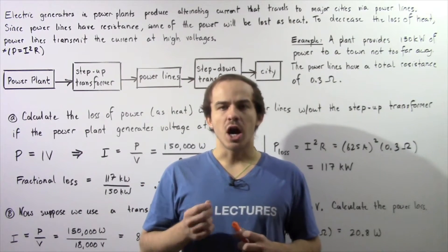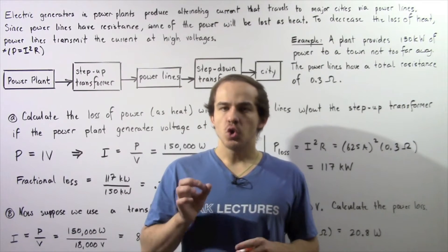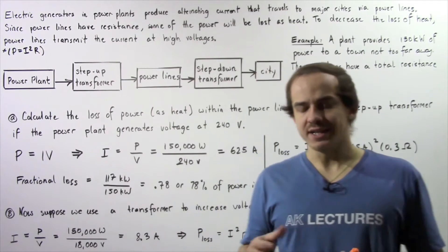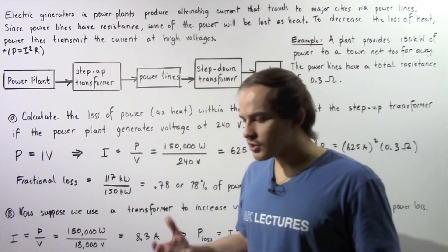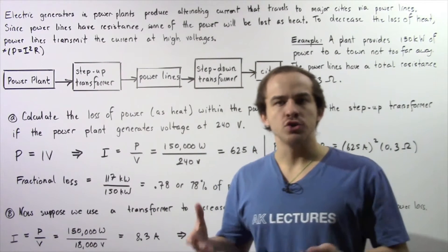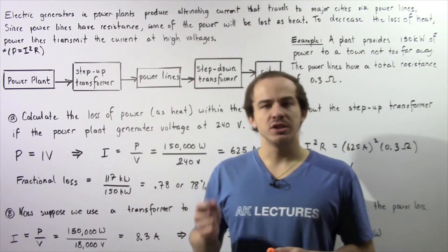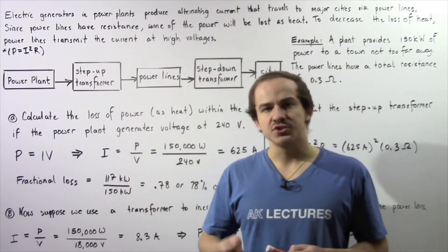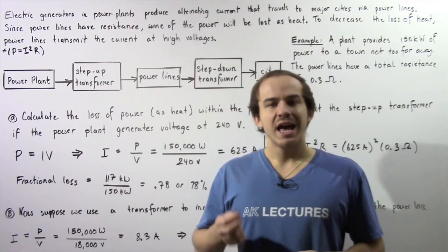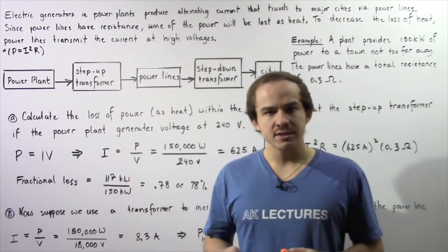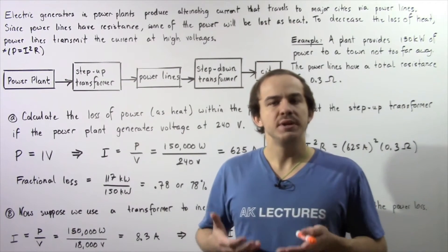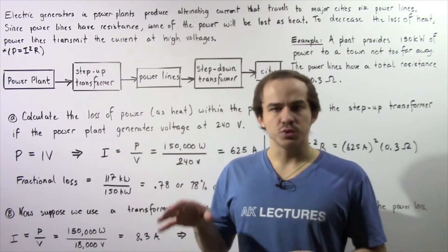Let's continue our discussion on transmitters. When an alternating electric current is generated within electric generators inside power plants, that current travels to cities and towns via power lines, also known as transmission lines. Those power lines contain a certain quantity of resistance, and as a result of that resistance, some of the power produced inside the power plants will be lost within those resistors.